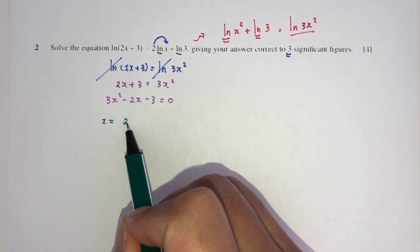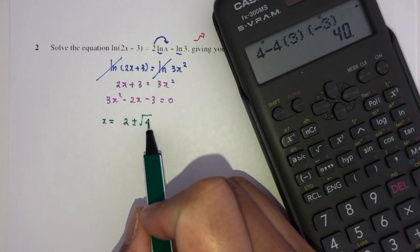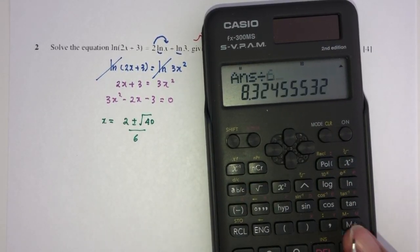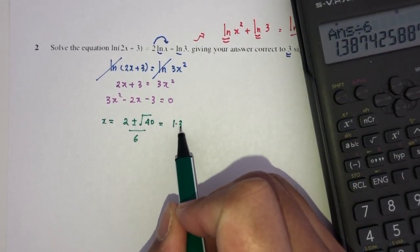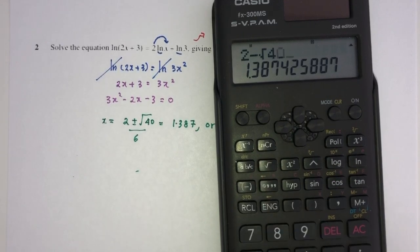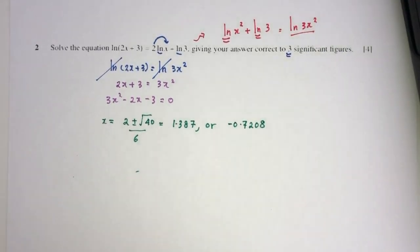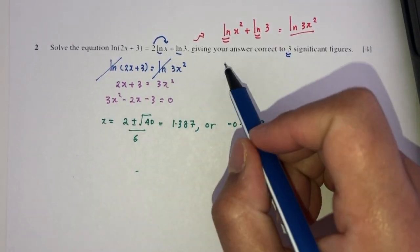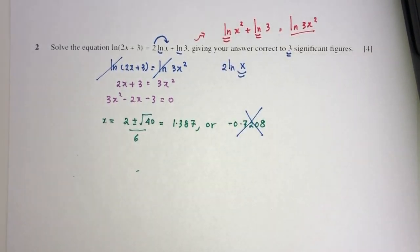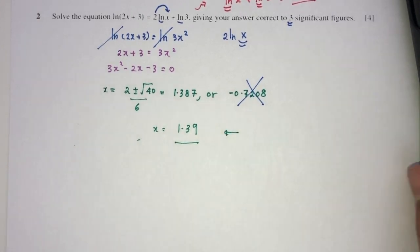x has to be minus b plus minus, b squared will be 4, minus 4 times a times c. That will be 40, divided by 2a which is 6. So 2 plus root of 40 divided by 6, that will be 1.387, or 2 minus the value of root of 40 divided by 6, that will be minus 0.7208. We can double check. We have to select which one is right. Since here we have ln of x, so we have 2 ln of x here. And ln cannot take negative value, so this will not be good. The only good answer will be this one. Hence, correct with 3 significant figures, that should be 1.39. This is the answer for question number 2.